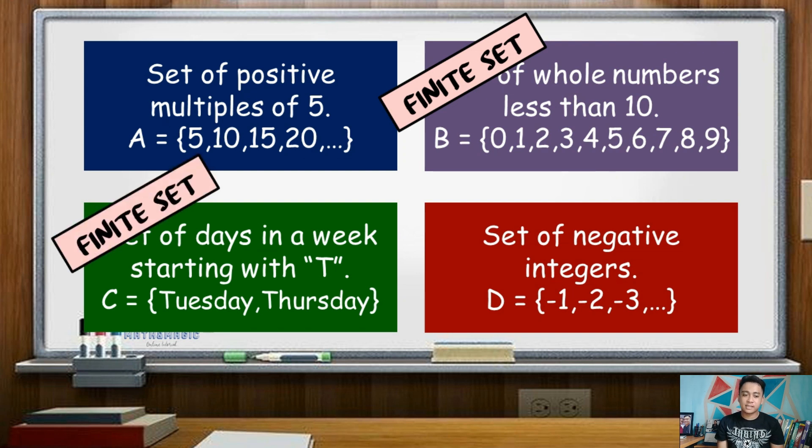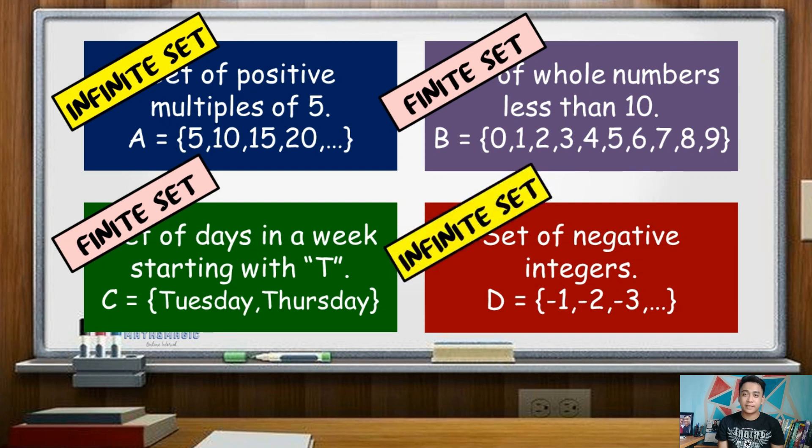While set A, the set of positive multiples of 5, and set D, set of negative integers, are all infinite sets.